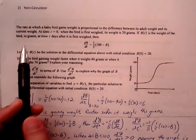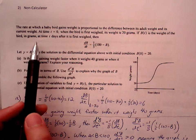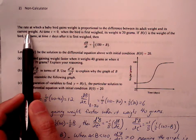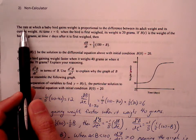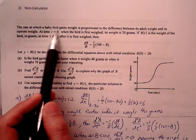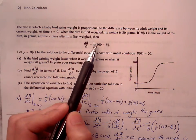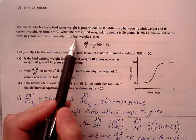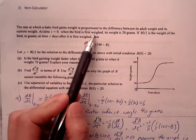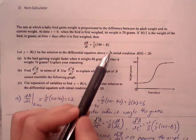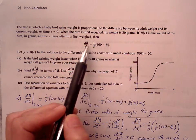We're continuing to look at differential equation FRQs for AP review, number two, no calculator. The rate at which a baby bird gains weight is proportional to the difference between its adult weight and its current weight. At time t equals 0, when the bird is first weighed, its weight is 20 grams.